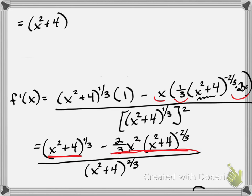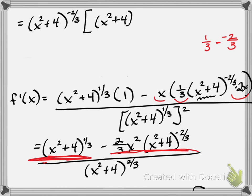We write down what's left. In this first term, if you take out the negative two-thirds — remember factoring is like dividing, so we subtract the power we're removing. That's three-thirds which is 1, so we're left with x squared plus 4 to the first power. Minus — this whole term is one big product, and if we take out the x squared plus 4 to the negative two-thirds, we're left with two-thirds x squared.